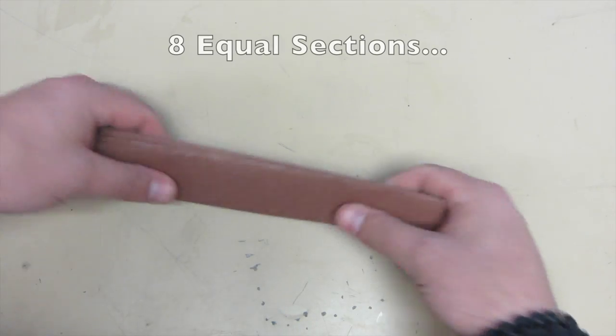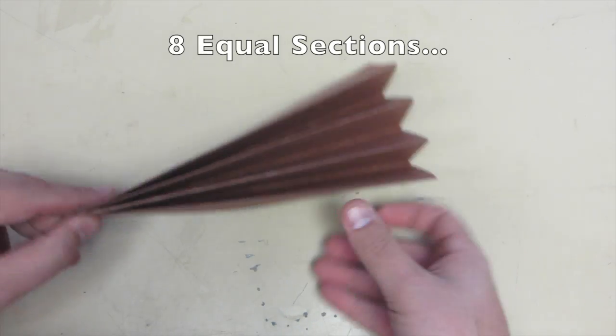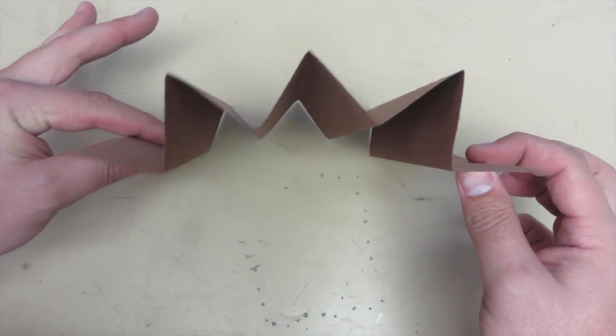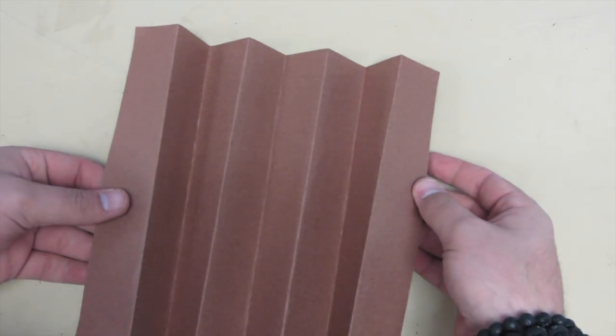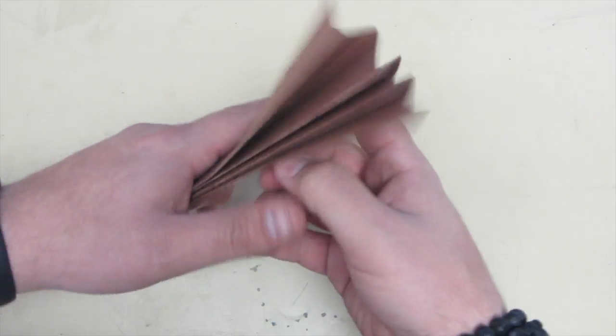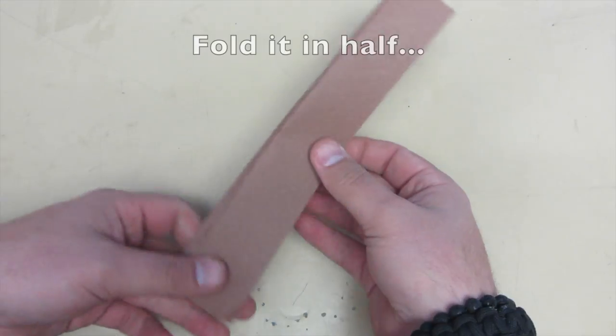This will give you eight equal sections. This is the shape that you're looking for. Fold it back together, and fold it in half, as seen.